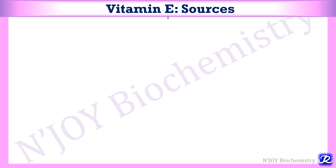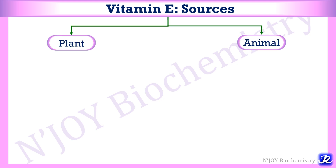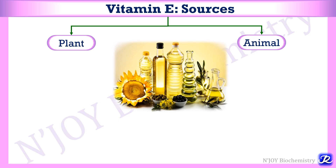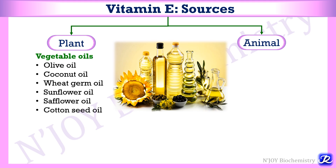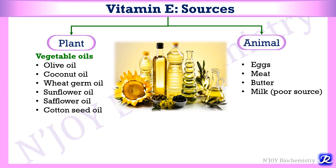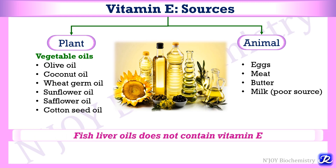Coming to the dietary sources of vitamin E — it can be derived from both plant and animal sources. Vegetable oils are the richest sources: olive oil, coconut oil, wheat germ oil, cottonseed oil, sunflower, and safflower oil. Animal sources include eggs, meat, and butter. Milk is a poor source, and fish liver oil does not contain vitamin E.